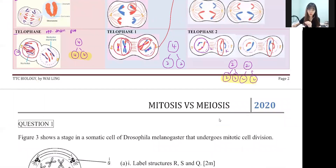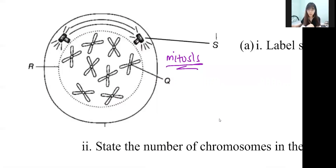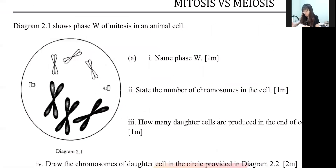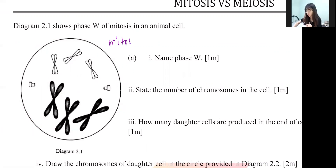Now we're going to apply this knowledge to exam questions. Question one: in one cell, all same color, one color only - confirmed it's mitosis. Next question: in one cell with two colors - but wait, I said meiosis must be one chromosome with two colors. If all chromosomes are all the same color with no mixing, then confirmed it is still mitosis. So this is also mitosis, as the question already states it is mitosis.